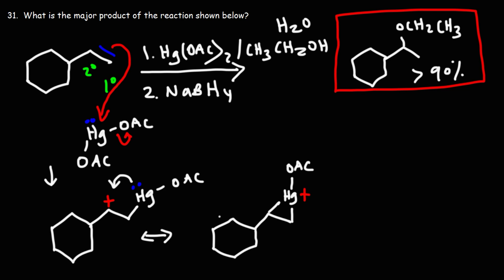Now the true hybrid is somewhere between these two resonance forms. Notice here the carbon has a positive charge. Here it does not. So for the resonance hybrid, this carbon is going to have considerable partial positive charge.